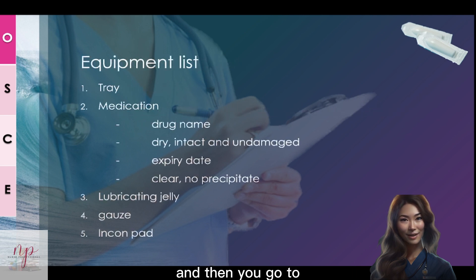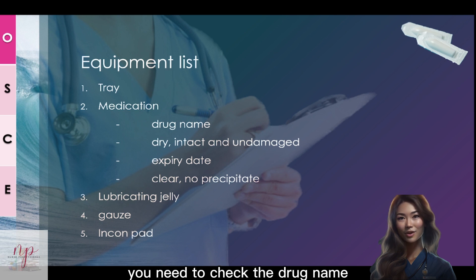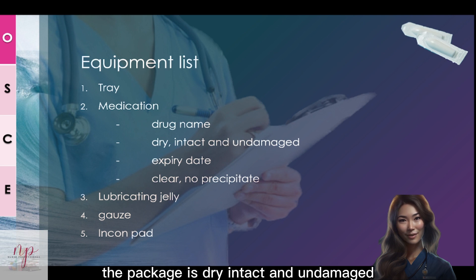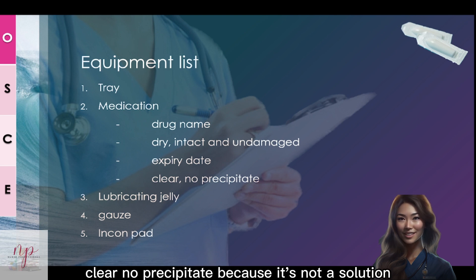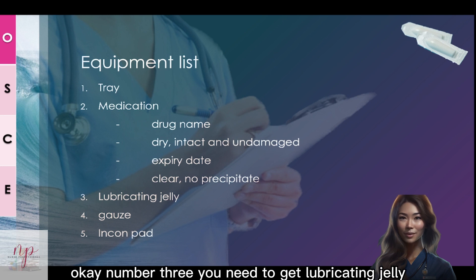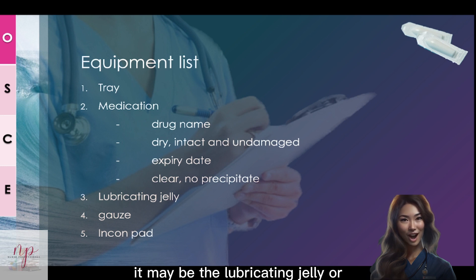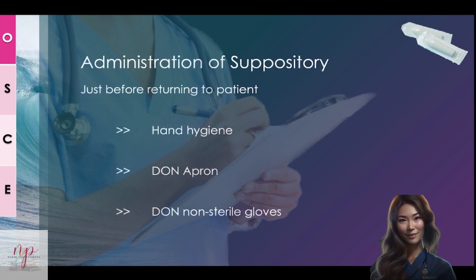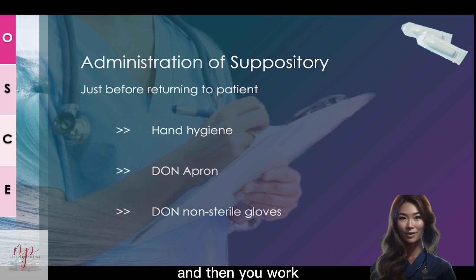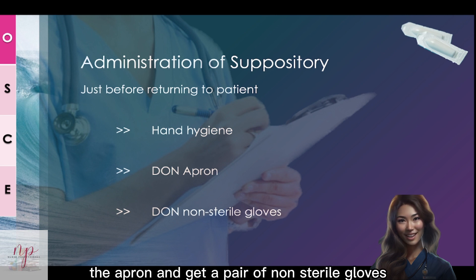Then go to get your tray — make sure it's clean. Get the medication and check the drug name, that the package is dry, intact and undamaged, and check the expiry date. You don't need to check for precipitates because it's not a solution. You also need to get lubricating jelly or a pot of water, gauze, and an incontinence pad. When ready to return to your patient, do hand hygiene, then wear the apron and a pair of non-sterile gloves.